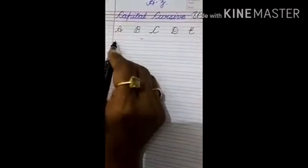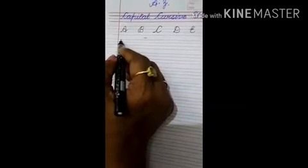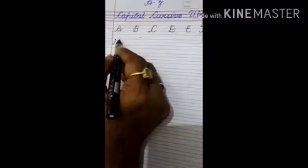For H, put your pencil on the red line, make a little slant line and come to the third line. Again, you have to lift your pencil from here, put it here, go down and take a round the way you have made A.